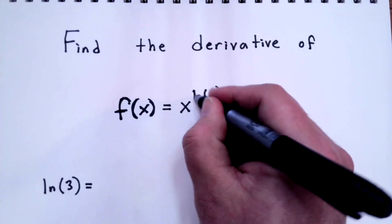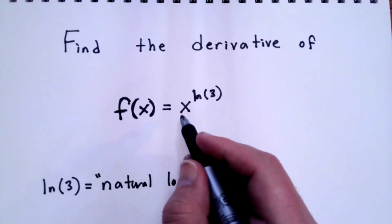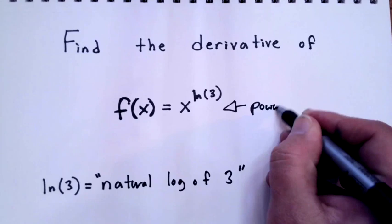Let's find the derivative of f of x equals x raised to the natural log of 3. The important thing here is that this natural log of 3 number is just a number like pi or e. So this is a variable raised to a constant.